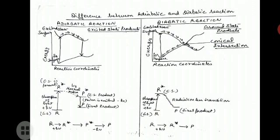In the diabatic photo reaction, both the excited state potential energy surface and the ground state potential energy surface take part. The lower S0 curve and upper excited state curve are both shown in the figure. In the diabatic photo reaction, the reactant absorbs a photon of light and changes into the excited state R* configuration. It begins to travel along the excited state surface until the geometry matches a geometry that is also found on the ground state potential energy surface. This position is known as the conical intersection, clearly visible in the figure for the diabatic reaction.